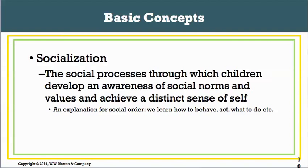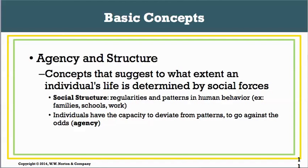Another concept we'll talk about is agency and structure — the idea of to what extent an individual's life is determined by social forces. Social structure refers to regularities and patterns in human behavior. For example, most of us are born into some kind of family, go to school, work, perhaps go to college, start our own families, and then our kids repeat the same cycle.